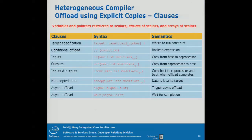We have 'in', 'out', and 'in-out' clauses. The compiler tries to figure out what data transfer needs to be done, but sometimes it cannot tell. In that case, you specify 'in' to transfer data from the host to the coprocessor, 'out' to transfer data back, or 'in-out' to transfer to the coprocessor and back. 'No copy' means don't copy anything — the data is probably already present.